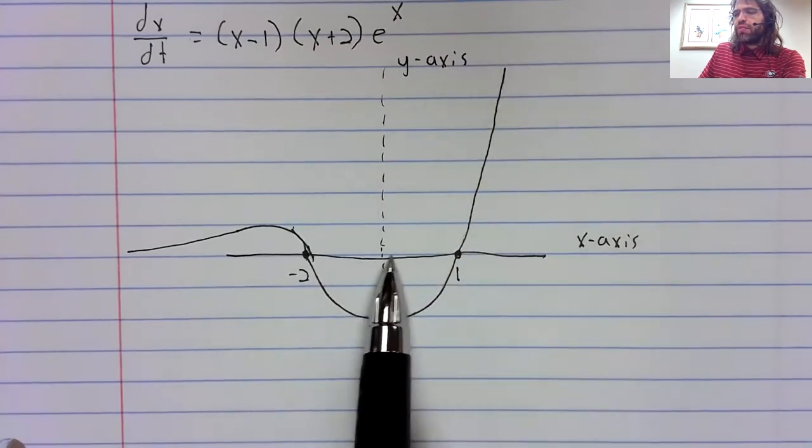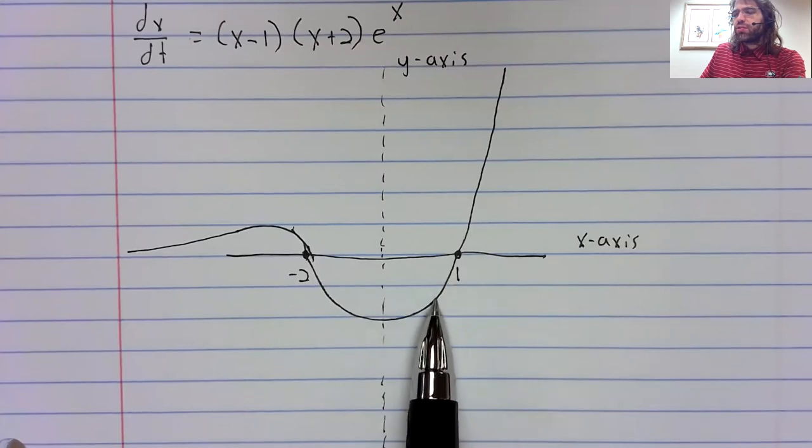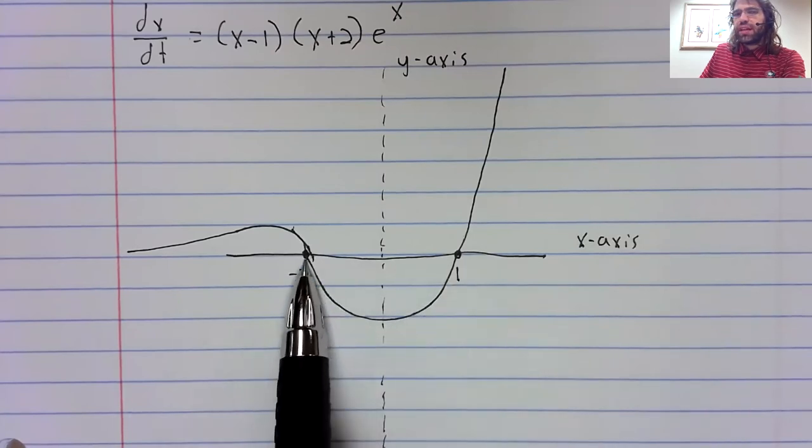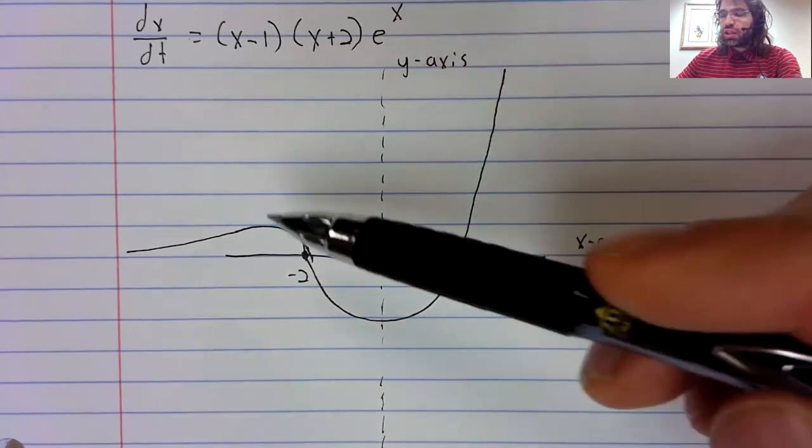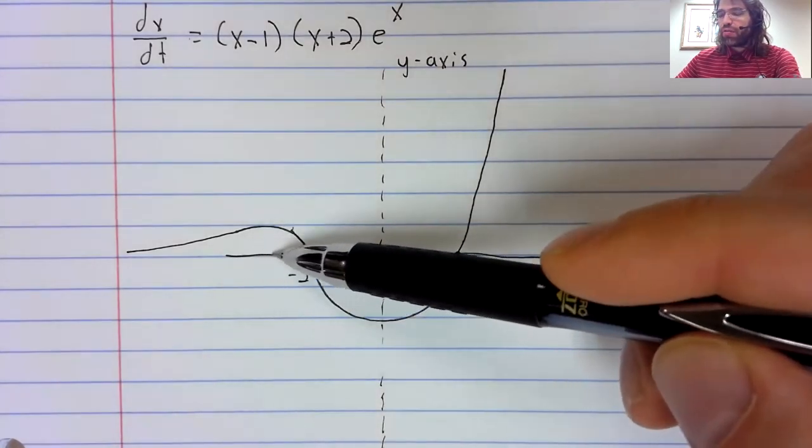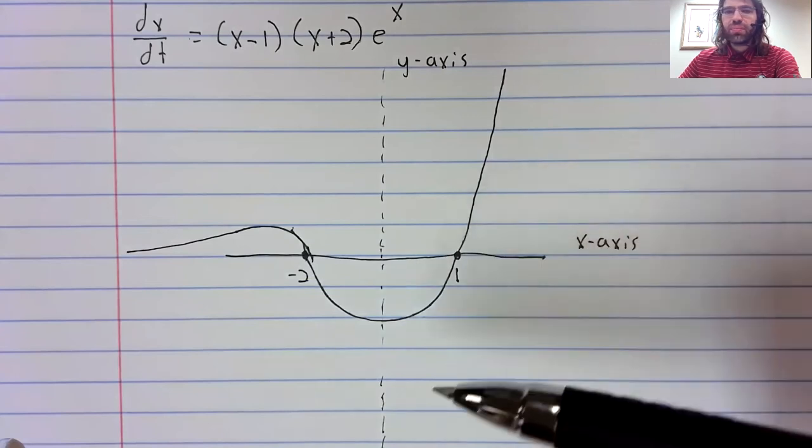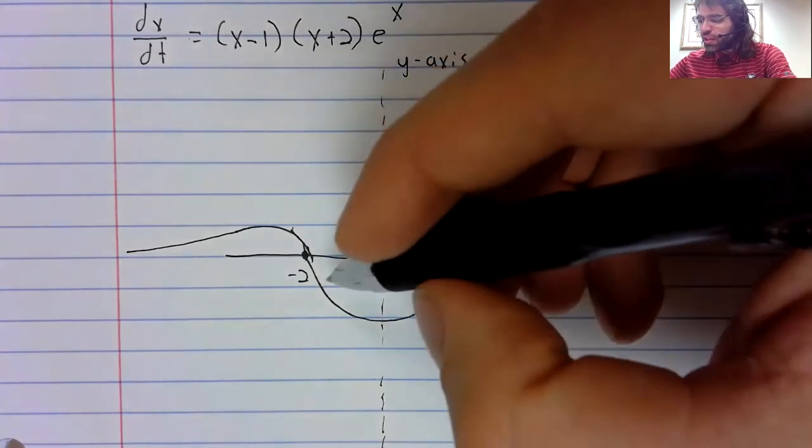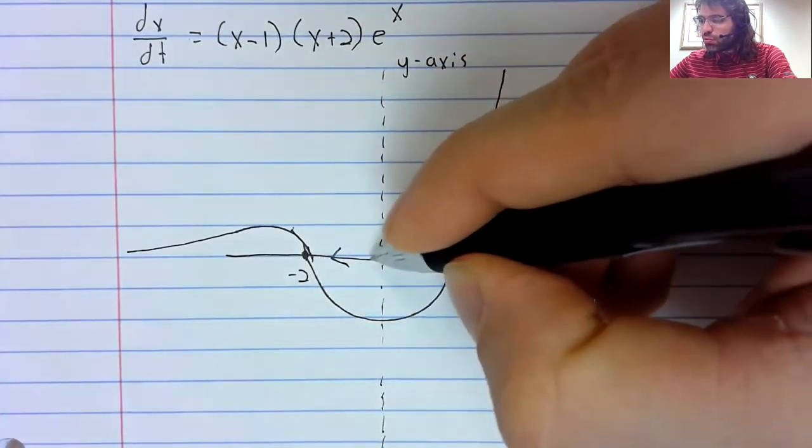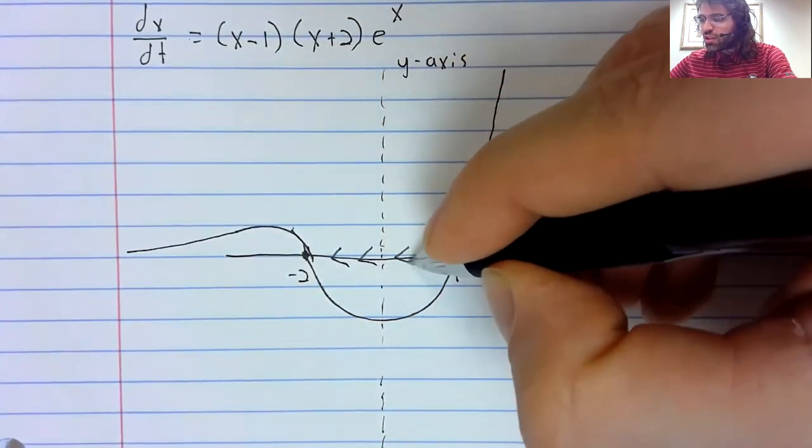And we go left when this derivative curve is negative. The curve is positive when it's above this axis and negative when it's below this axis. So it's below the axis here.